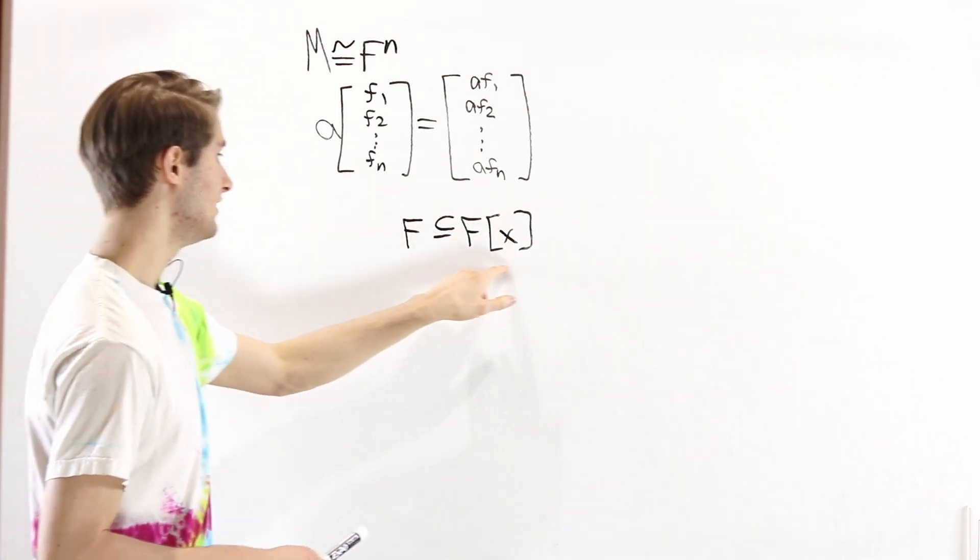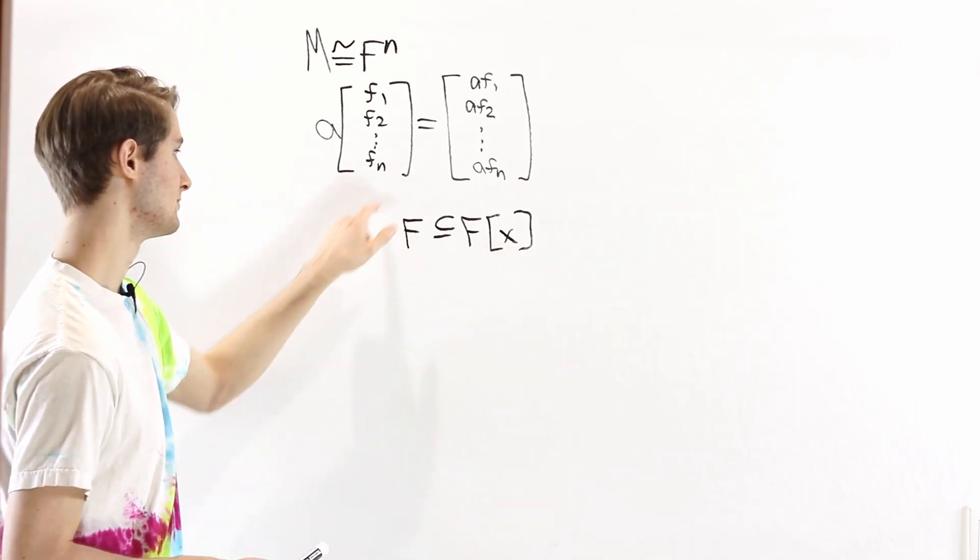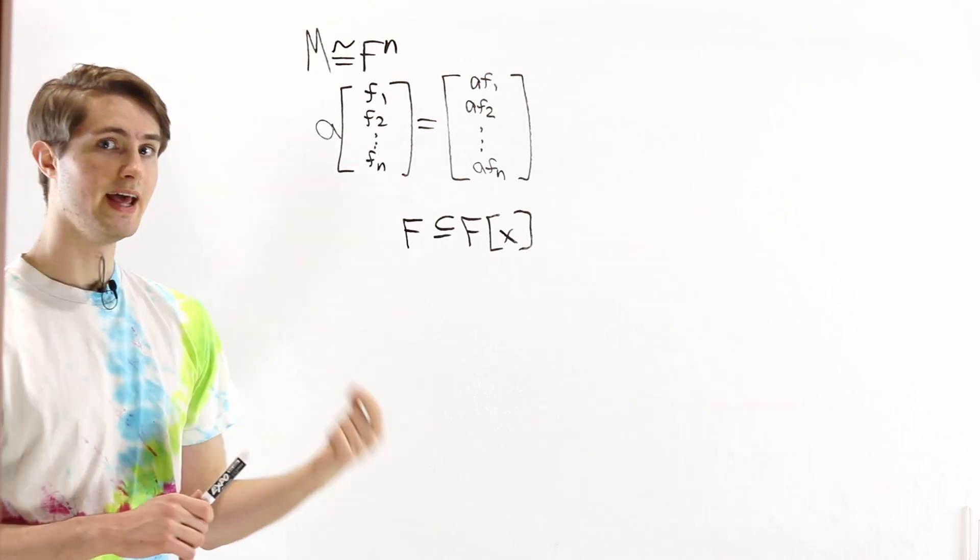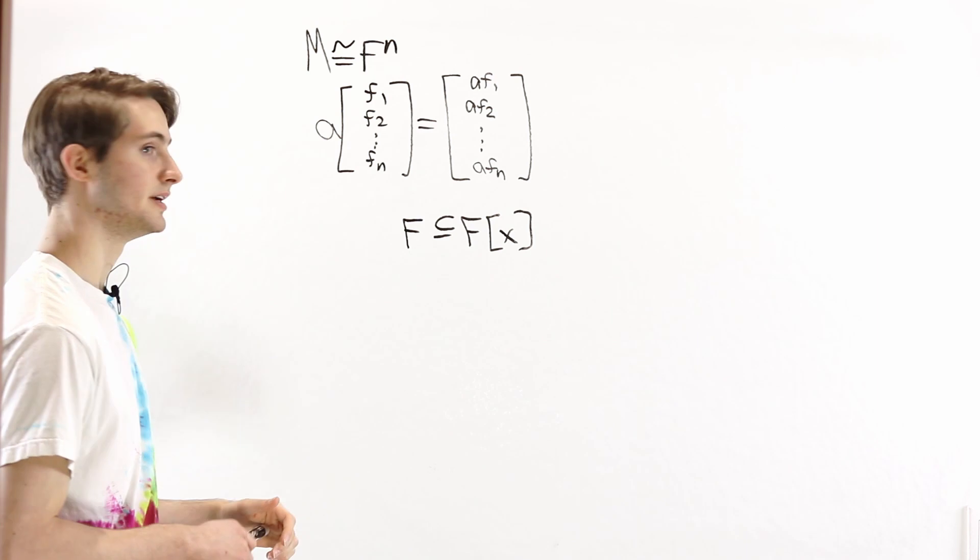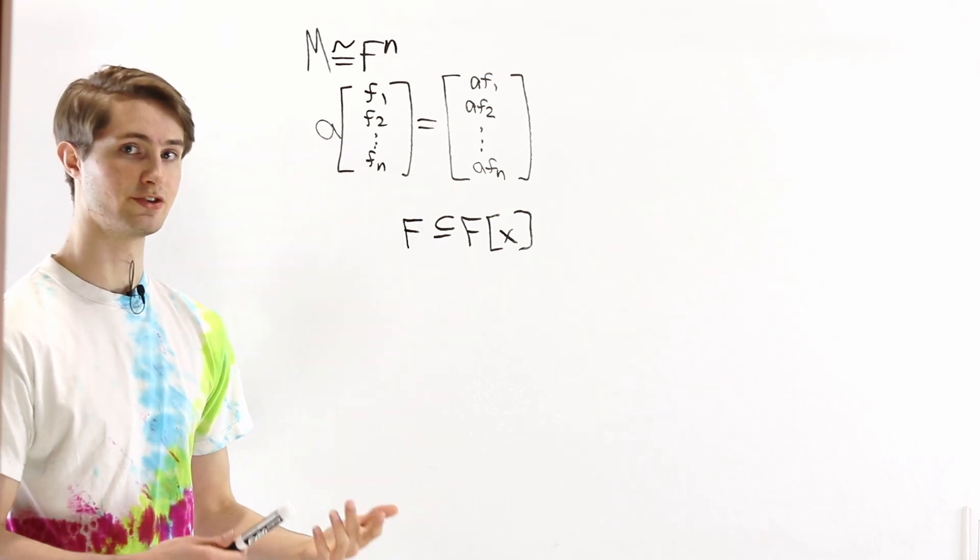Because M is an FX module, it has to satisfy the module axioms for all of the elements in the field. And that means that M is also a module over F. In other words, every FX module is also a vector space.